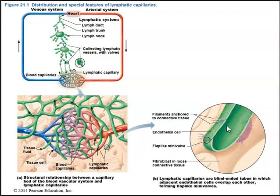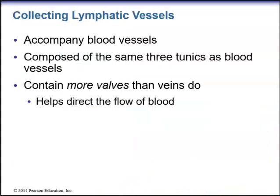Lymphatic capillaries are blind-ended tubes in which adjacent endothelial cells overlap each other and form flap-like mini valves. Collecting lymphatic vessels accompany blood vessels and are composed of the same three tunics as blood vessels — the tunica intima, tunica media, and tunica externa, also known as the tunica adventitia. Collecting lymphatic vessels contain more valves than veins do and help direct the flow of lymph.